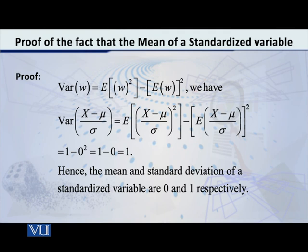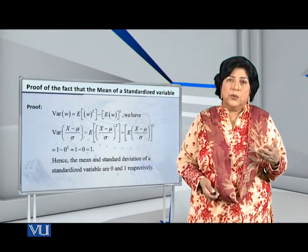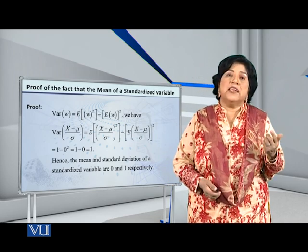So the variance of (x minus mu) over sigma equals the expected value of [(x minus mu) over sigma] squared, minus the expected value of [(x minus mu) over sigma], whole squared. Now let us substitute the results we have already proved. The first term — the expected value of [(x minus mu) over sigma] squared — we showed equals 1. The second term — the expected value of (x minus mu) over sigma — we showed equals 0. So we get 1 minus 0 squared, which is 1 minus 0, which equals 1.